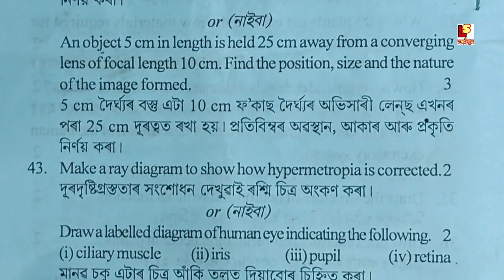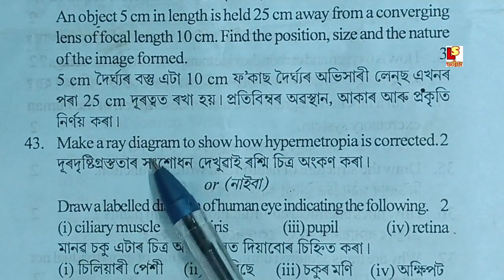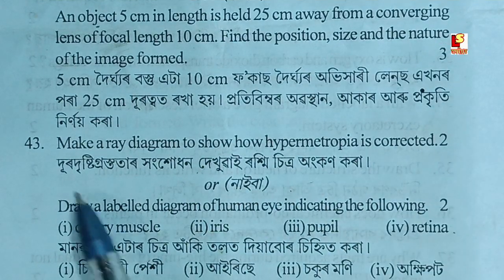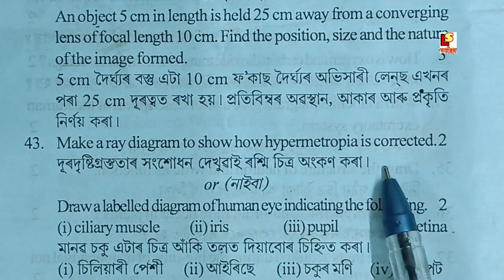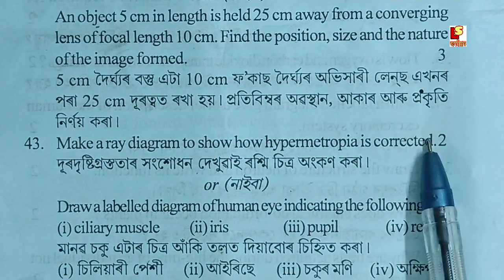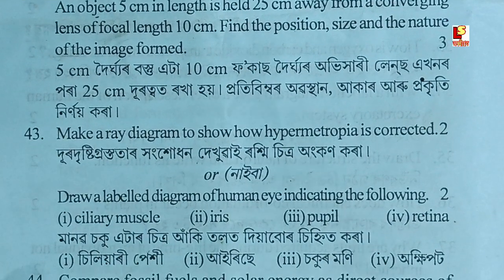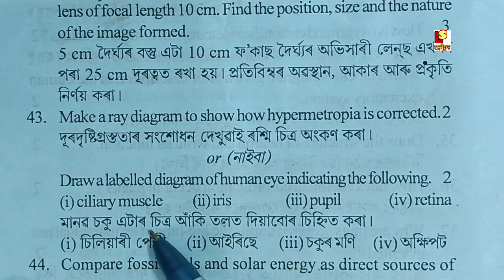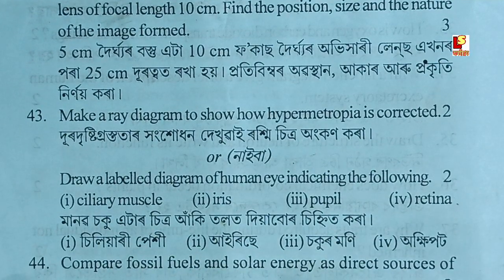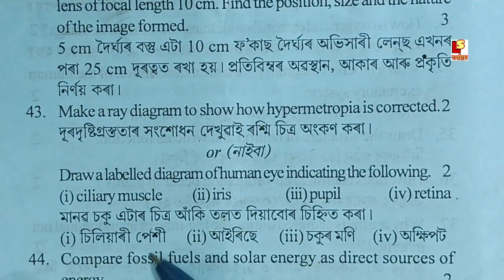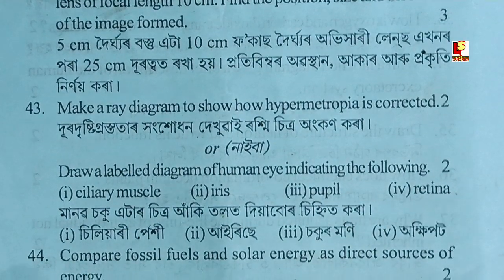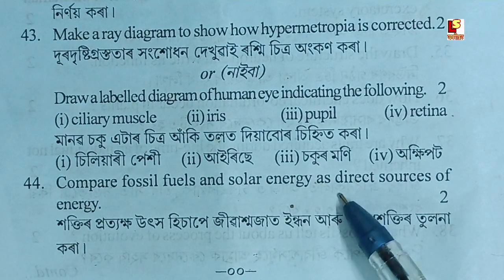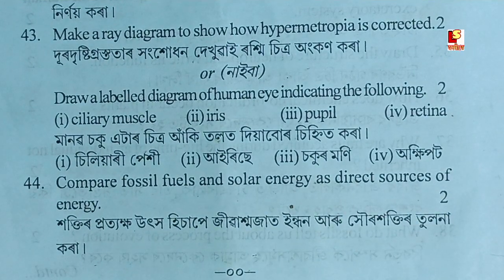Make a ray diagram to show how hypermetropia is corrected. Draw a labelled diagram of the human eye indicating the relevant parts. Compare fossil fuels and solar energy as direct sources of energy.